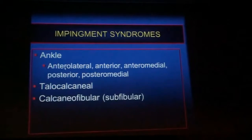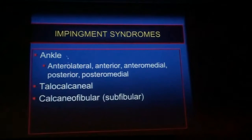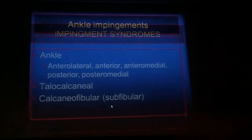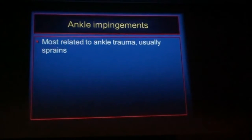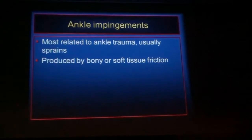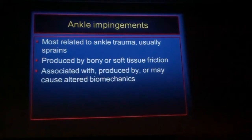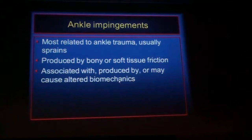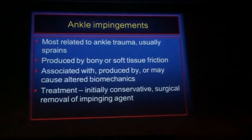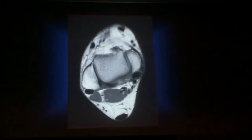I'm going to cover anterior and lateral ankle impingements, and then once I finish with ankle impingements, I'm going to talk about what we call extraarticular impingements — that's the talocalcaneal and calcaneofibular impingement. Most ankle impingements are related to ankle trauma, usually sprains. They can be due to any cause of bone or soft tissue friction and are often associated with altered biomechanics. Treatment is usually conservative initially, and then surgical removal of the impingement agent is resorted to if that does not succeed.